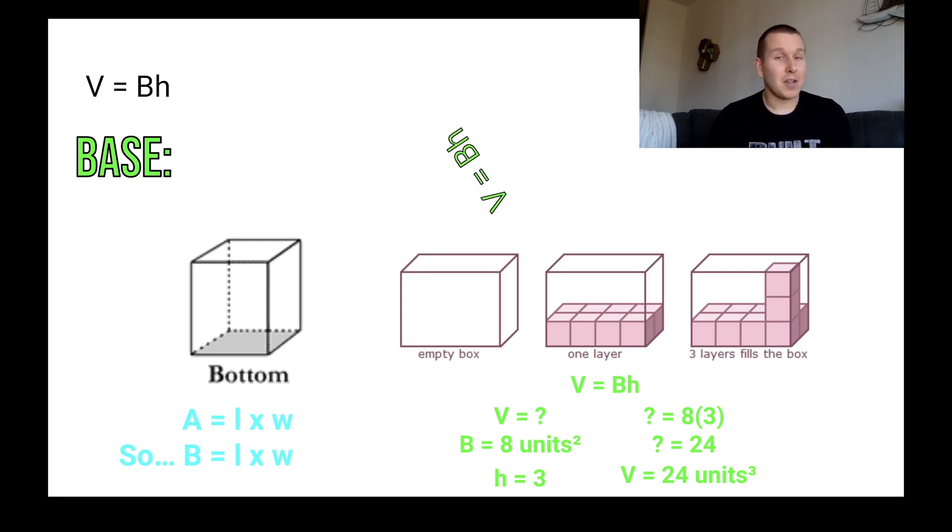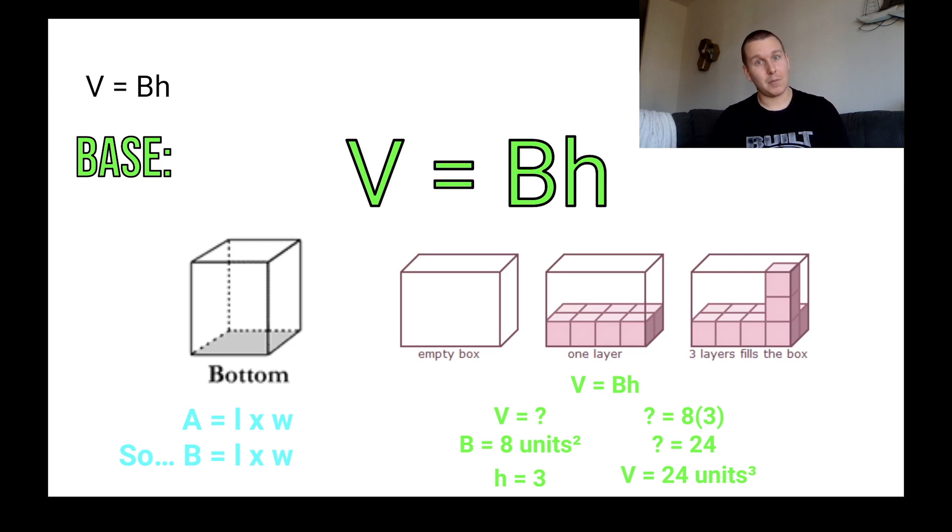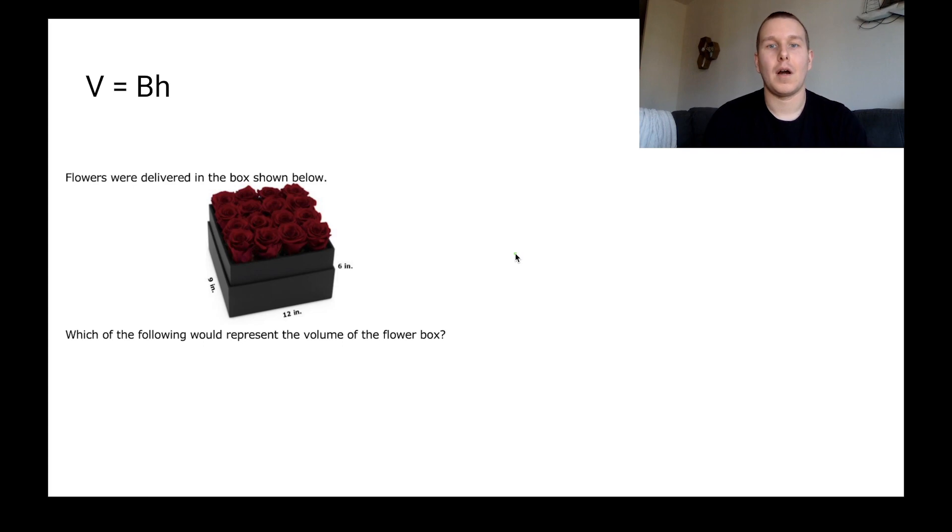So volume's easy. V equals big B times little H. One thing we are going to have to know, though, is there's going to be some appropriate times for us to use V equals big B times little H. But there's also going to be some times where we need to use V equals length times width times height. Let's go ahead and practice a couple problems together. All right, so we've got our first problem here. And what we're going to try to decide to do is what formula are we going to use? Length times width times height or big B times little H?